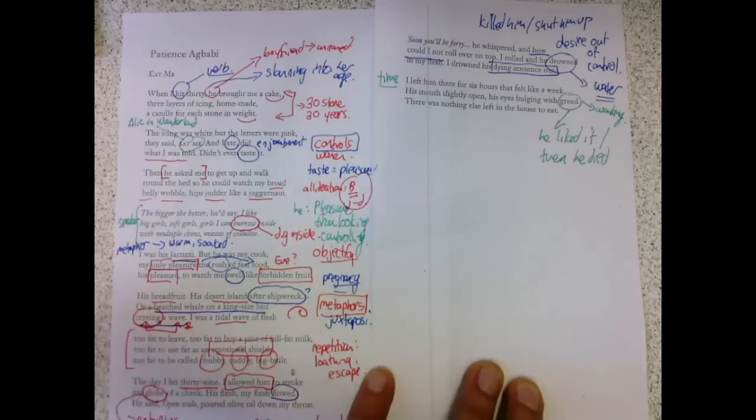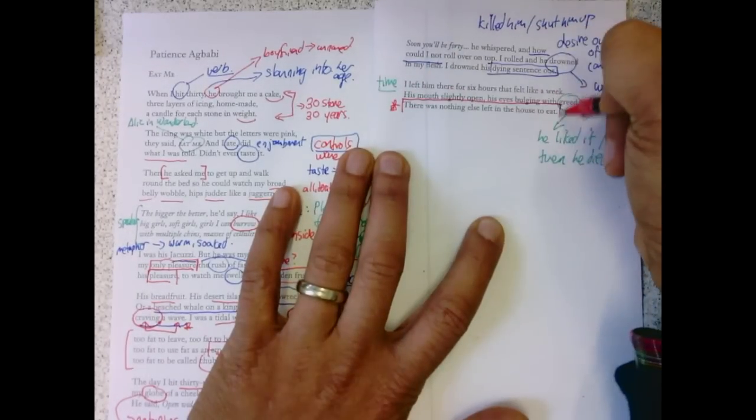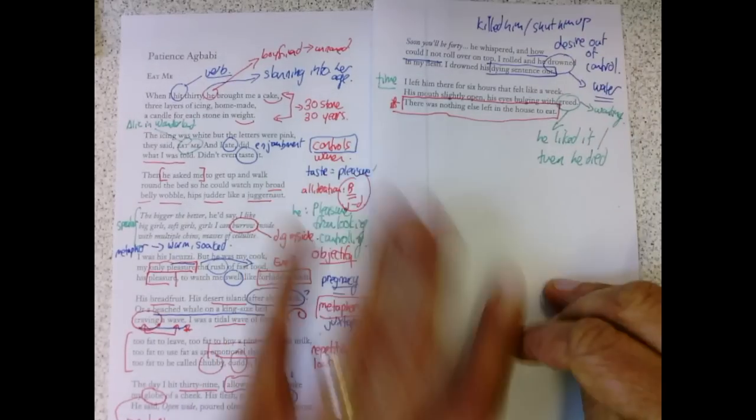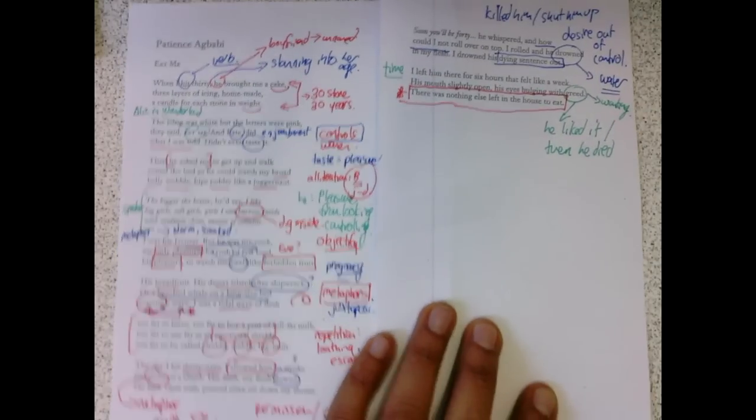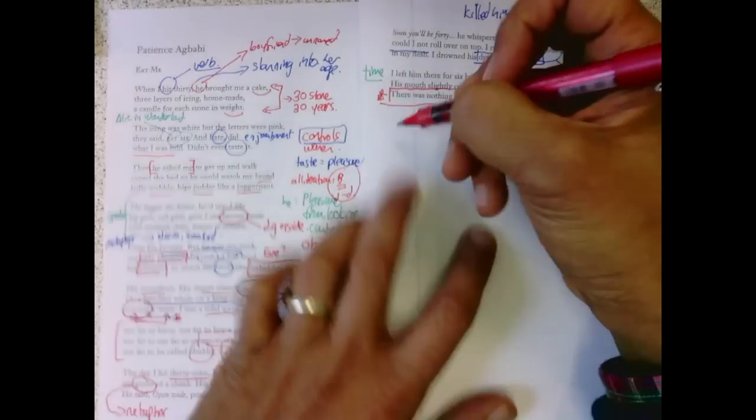There was nothing else left in the house to eat. I find with many of the poems in this anthology, openings and closings are really important. And this is really a frightening closing. Does she eat him?